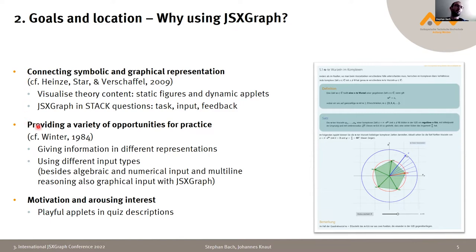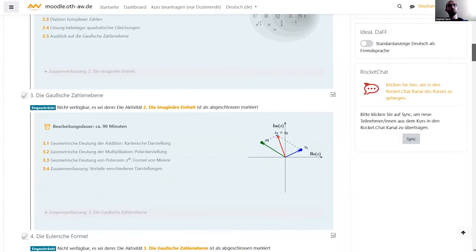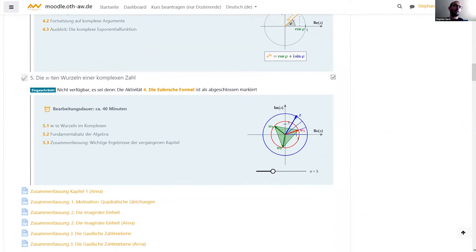In addition to connecting symbolic and graphical representation, we want to provide a variety of opportunities for practice. Students can use graphical input — they can plot, not just type symbolic expressions — and we can give information in different representations. There are also playful applets which hopefully arouse interest and motivate students. I want to show these different goals and uses of JSXGraph in one of the interactive chapters on the nth roots of complex numbers.